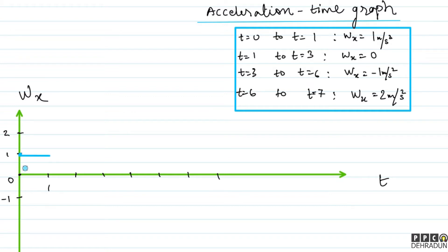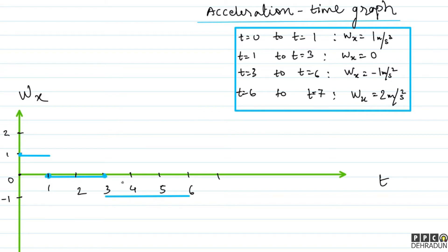Maine graph mein dikha diya ki t = 0 se t = 1 tak wx constant hai aur uski value 1 hai. Uske baad t = 1 se t = 3 tak acceleration bilkul 0 hai. Phir t = 3 se t = 6 tak acceleration constant aur minus 1 meter per second square hai — woh bhi dikh gaya graph mein. Aur finally t = 6 se t = 7 tak acceleration 2 meter per second square ho gaya.